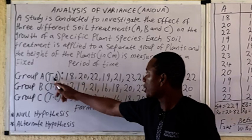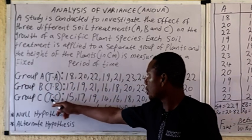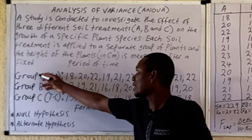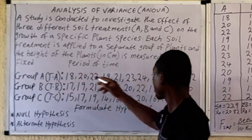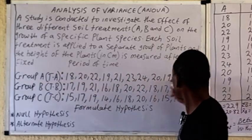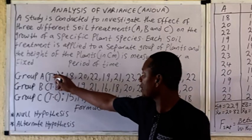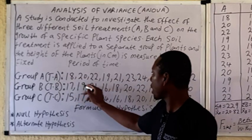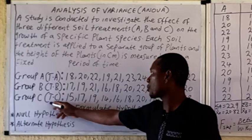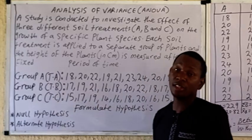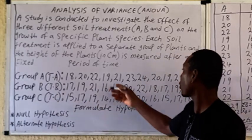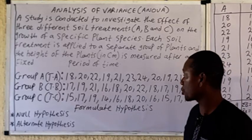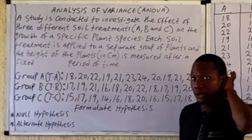TA means Treatment A, TB means Treatment B, and TC means Treatment C. Eleven plants were treated with TA, 11 plants were treated with TB, and 11 plants were treated with TC. In some cases, the number of plants in one group may differ from the other — it doesn't matter, you still apply the same method.